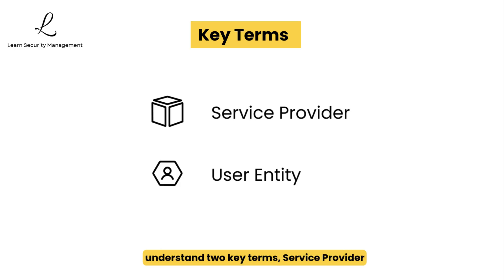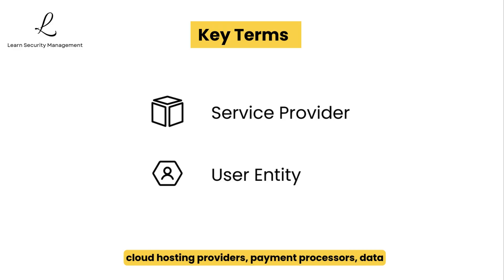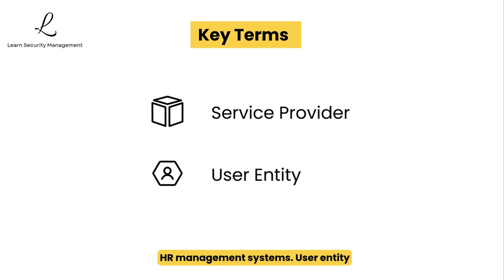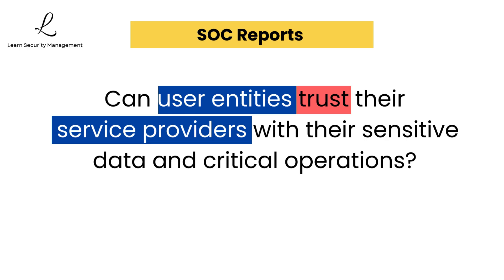Let's understand two key terms: service provider and user entity. A service provider is a company that provides services to other businesses — examples include cloud hosting providers, payment processors, data centers, SaaS companies, or HR management systems. User entity refers to the customer organizations that use the service provider's services and rely on their systems and controls as part of their own operations. SOC reports essentially answer the question: can user entities trust their service providers with their sensitive data and critical operations?